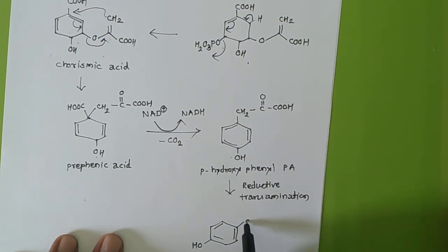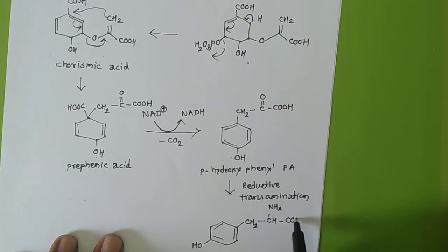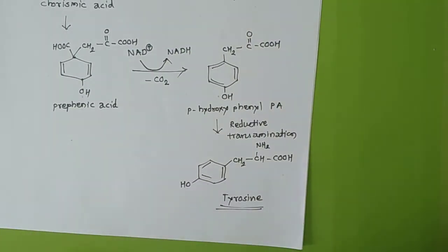Now our target molecule: like in the last reaction, there will be reductive transamination. After reductive transamination you will get OH, CH2, CH2, NH2, and COOH. So this is the tyrosine molecule.